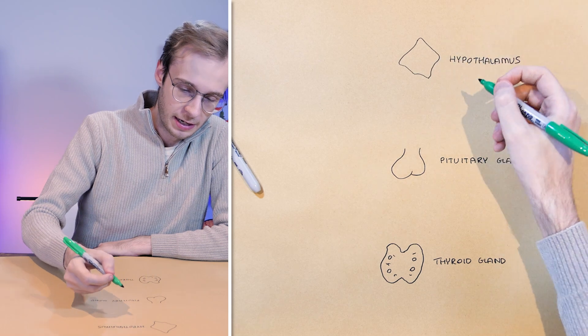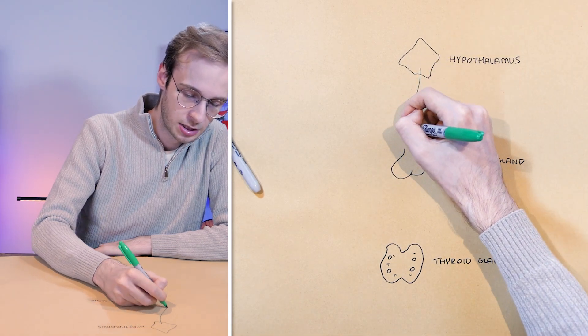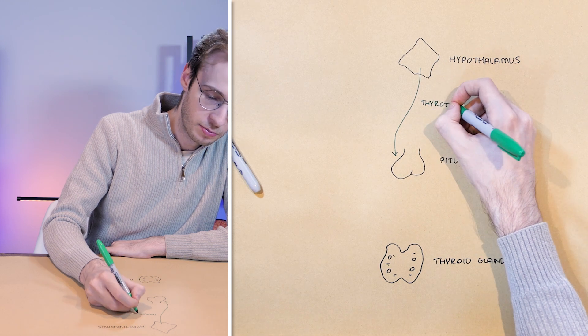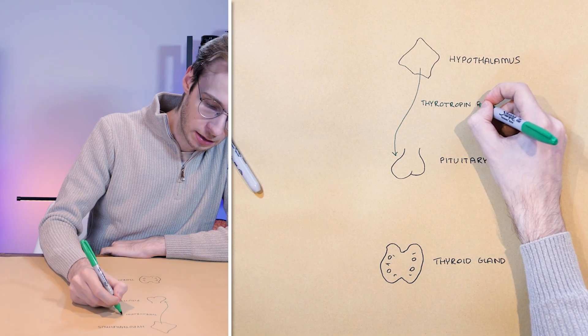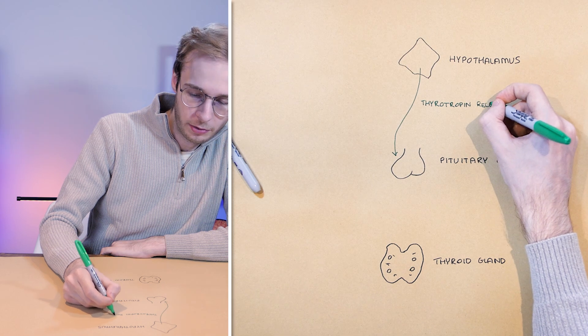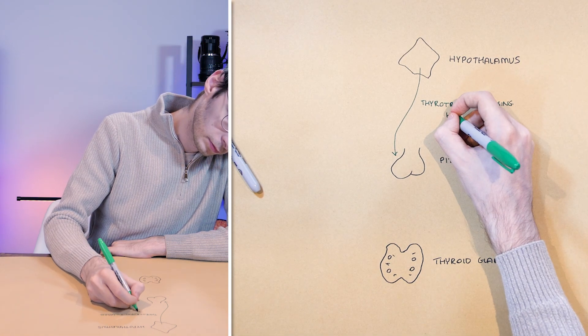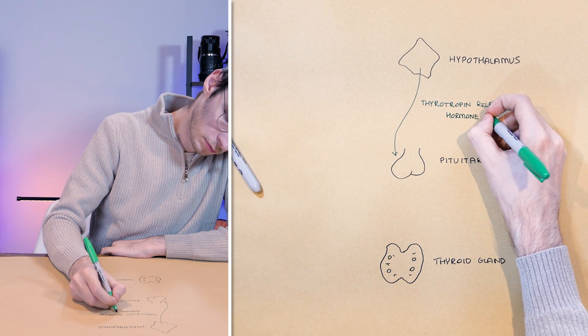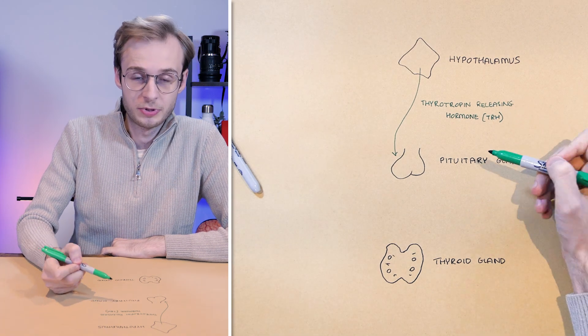So the first step in our thyroid pathway is the release of TRH from the hypothalamus and that is thyrotropin releasing hormone. That goes and stimulates the pituitary gland,